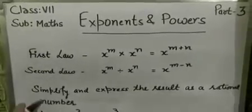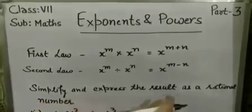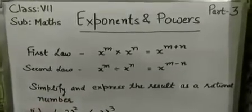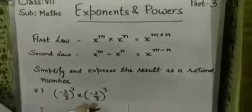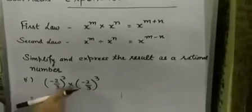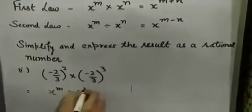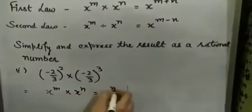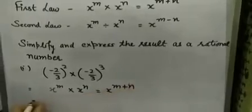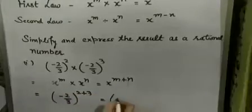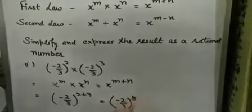Moving to the next example: simplify and express the result as a rational number. The first thing to check is that the bases are same, and the sign between is multiplication. So we apply the first law of exponent: x raised to power m plus n. We get minus 2 by 3 raised to power 2 plus 3, which is minus 2 by 3 raised to power 5. In this question, we have to give the result as a rational number, so we are going to simplify it.